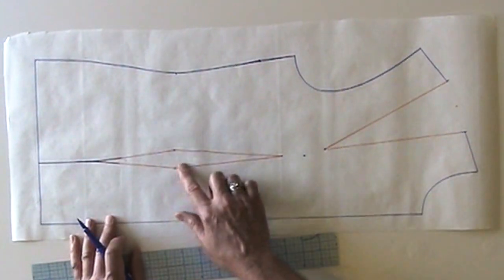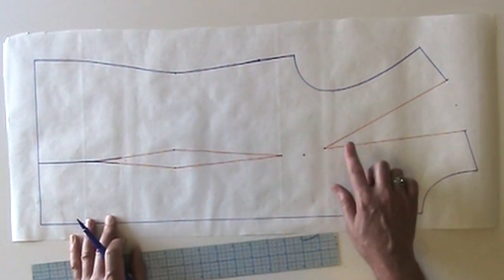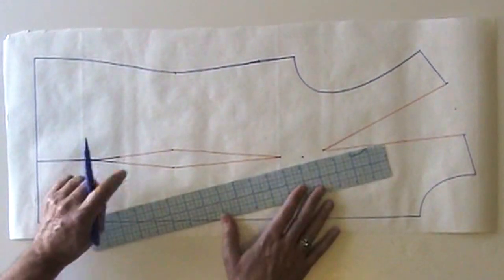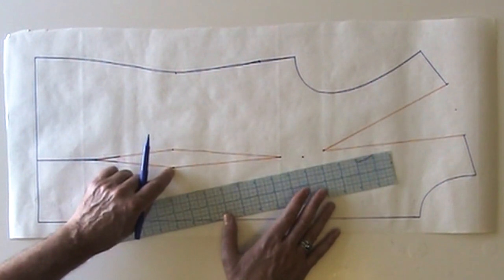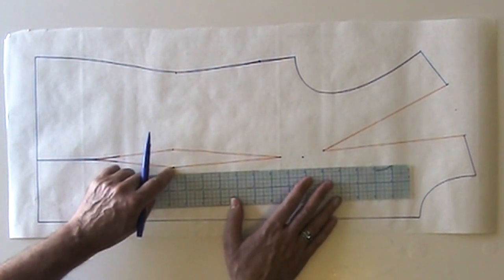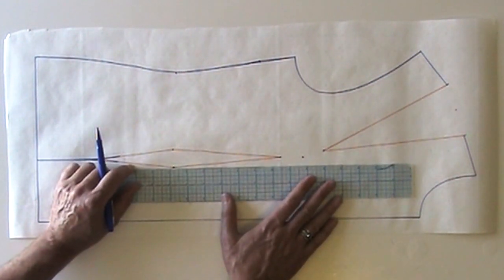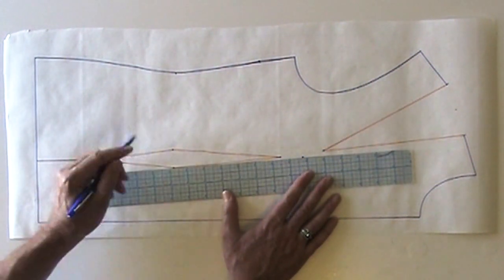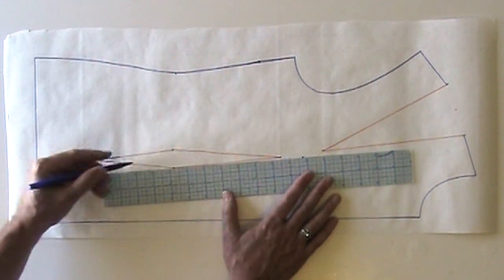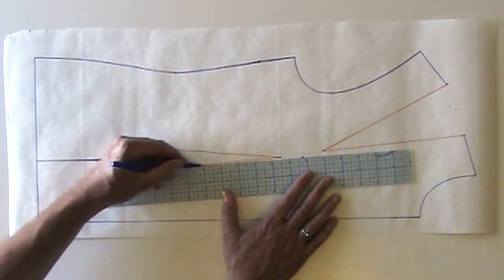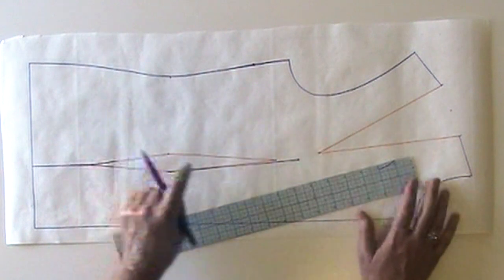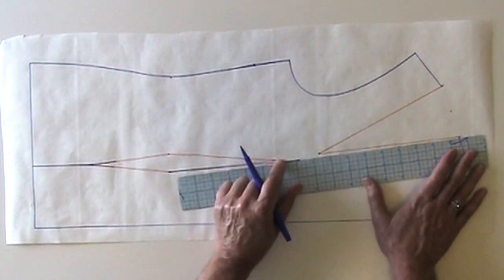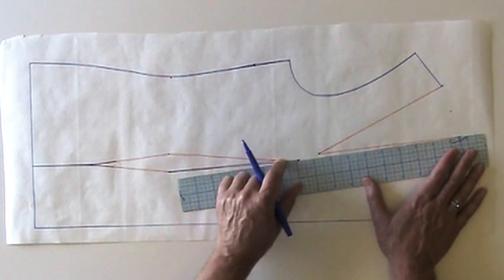Then I need to connect my waist dart to my bust dart. I'm going to first, starting at the waist point of the dart on the center front side, draw a line connecting it to my bust apex point. And then from the bust apex point, I'm going to connect to the bust dart at my shoulder.